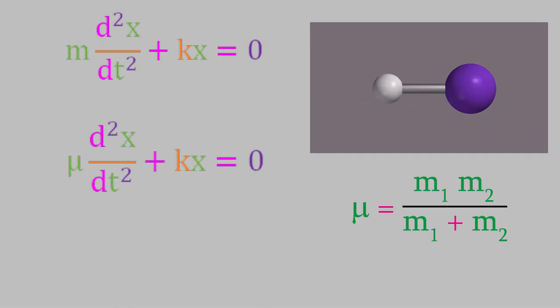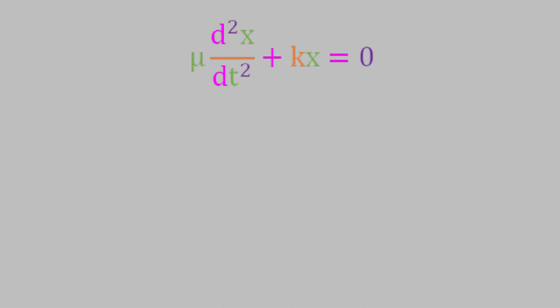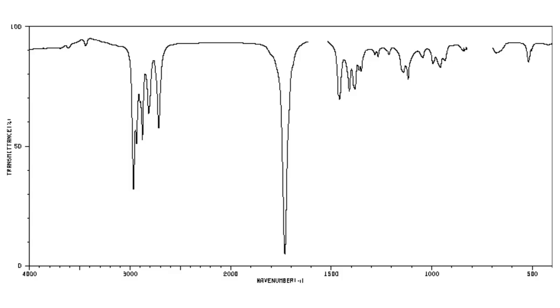It turns out that this differential equation is in a form that has a well-known solution, and if you take a course in differential equations, you'll probably learn about it. The solution to the equation is this. In this expression, the constant omega is equal to the square root of k over mu. But look at that solution for a moment. It's really just a simple cosine wave with a frequency equal to omega.